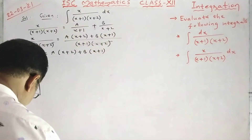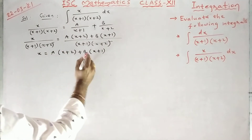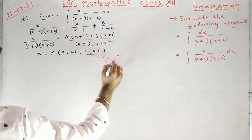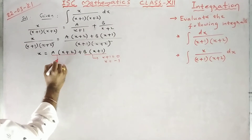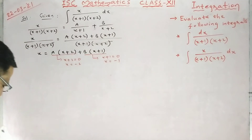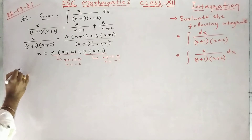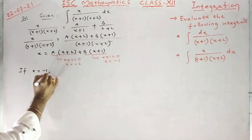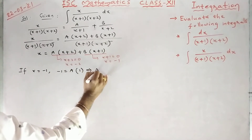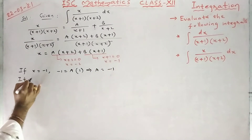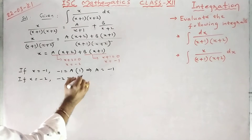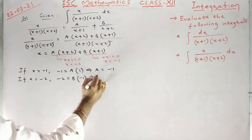To get the value of A, make the coefficient of B equal to 0, so x = −1. If x = −1: −1 = A(−1+2) = A×1, so A = −1. To get the value of B, make x+2 = 0, so x = −2. Then −2 = B×(−2+1) = B×(−1), so B = 2.